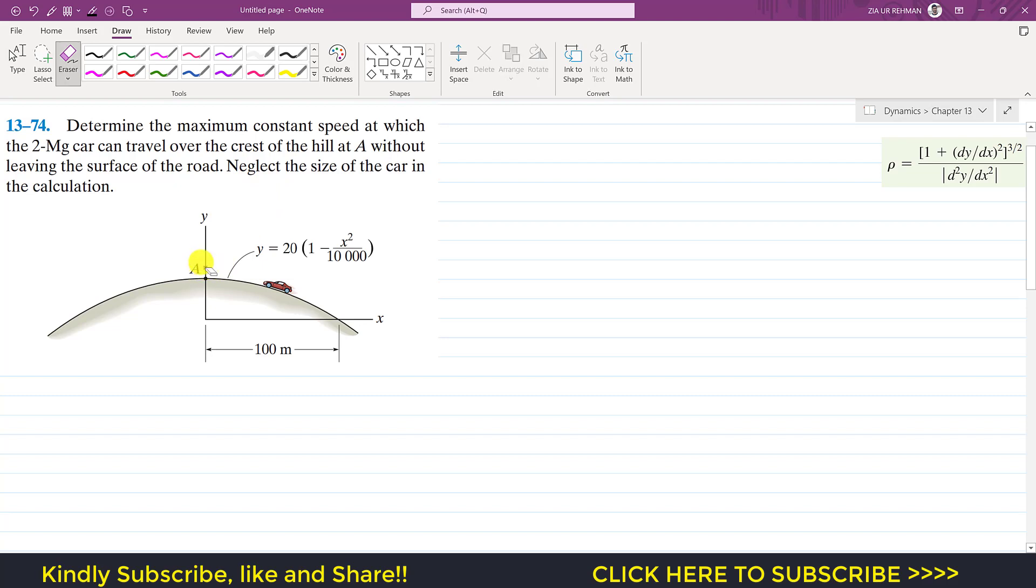If the car is at point A and if it is moving from right to left, we will define our coordinate system so the tangential axis will be in this direction, that is in the direction of motion, and the normal direction is towards the center of the radius of this curvature. So this is our normal direction.